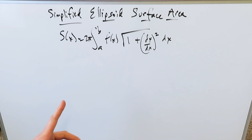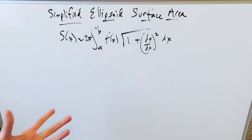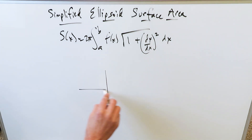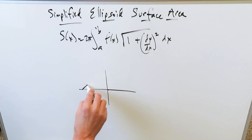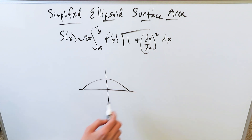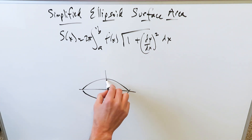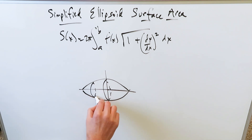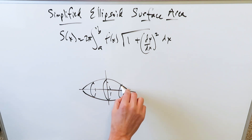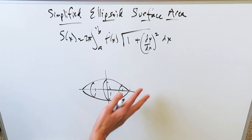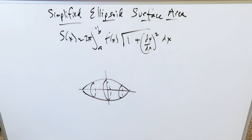An ellipsoid is a three-dimensional solid which is derived from the ellipse. Look right over here at an x and y axis. If this right here represents your ellipse — it's an eccentric circle — you're giving it a three-dimensional representation. This is what you're looking at, and how can we determine the surface area of a solid like this? I'll show you a simplified version.